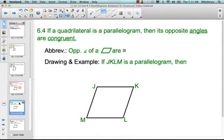6.4. If a quadrilateral is a parallelogram, then its opposite angles are congruent. So just like its opposite sides are congruent, its opposite angles are also congruent. And there's an abbreviated form for that. And then the way you would draw that, right, how we indicate congruency of angles.